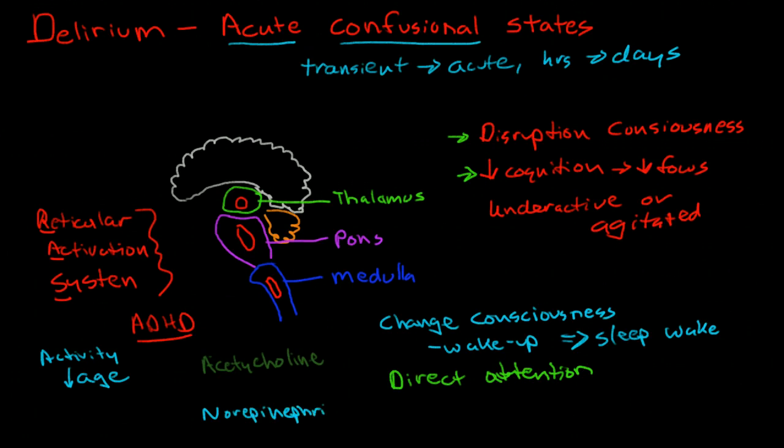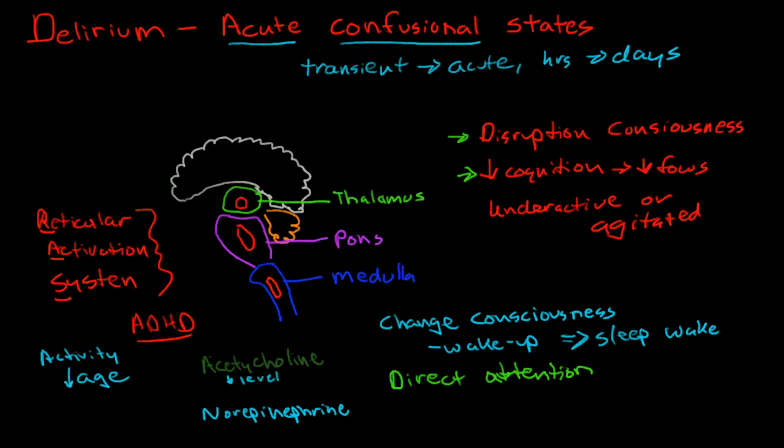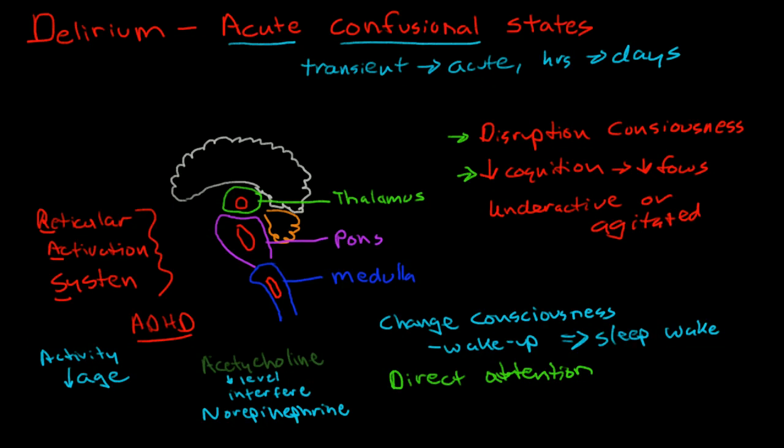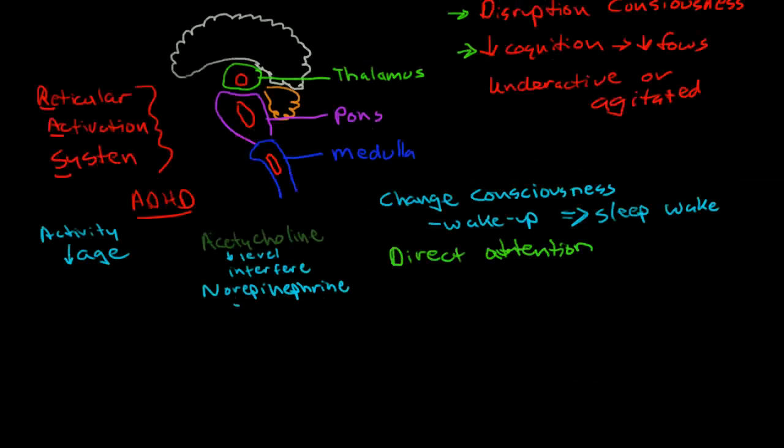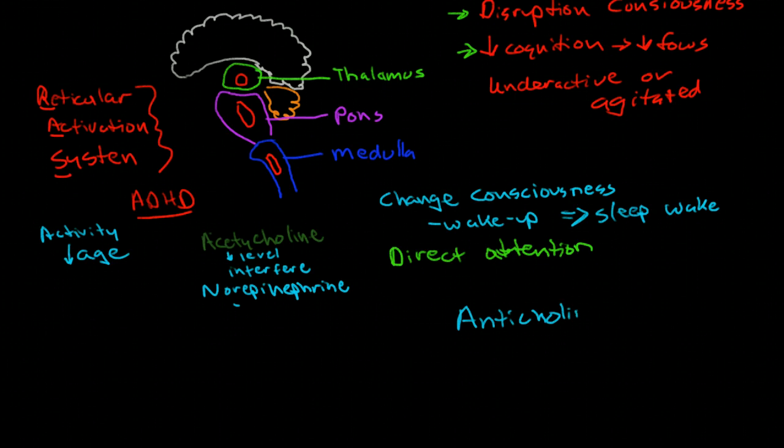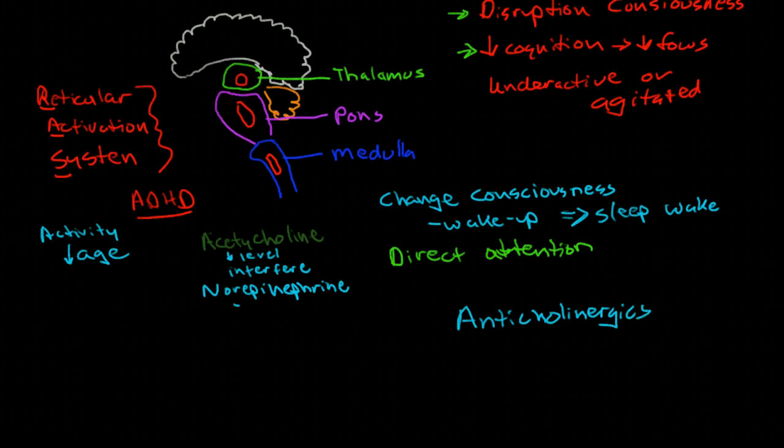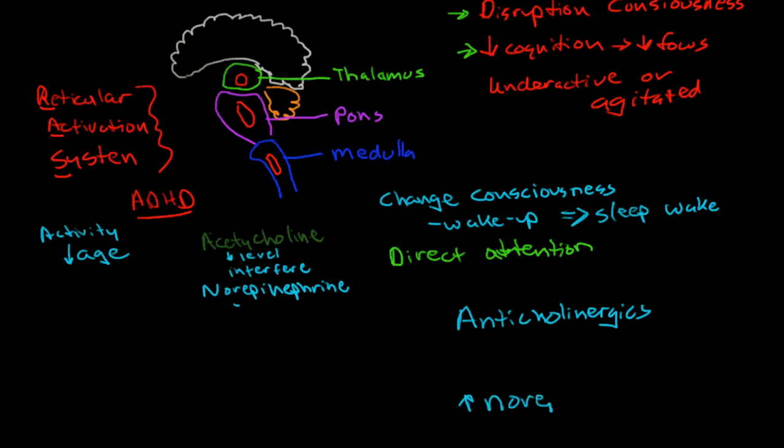So if we have things that change the level of acetylcholine, that decrease the level, or interfere with acetylcholine receptors, then we can cause delirium. And things that change the levels of norepinephrine in this area of the brain can also affect it. So what kinds of things can cause delirium? Anything that causes increased anticholinergic activity, anticholinergics, or increased norepinephrine levels.